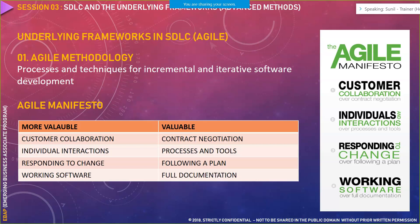The third pointer talks about responding to change over following a plan. Earlier in waterfall, different phases existed and backtracing was not allowed. Only after the project completed and reached the maintenance phase could a change to a particular feature be allowed. But in agile, you can respond to change at any point of time the customer or business user asks you to. That's the third pointer.